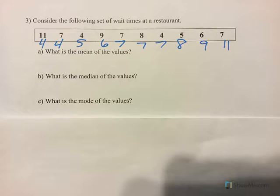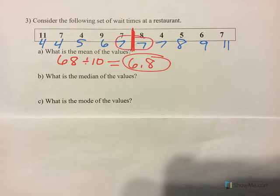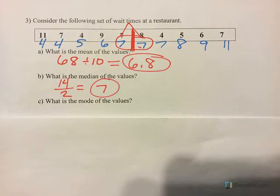If we're going to find the mean, the first thing we do is add them all together. If I add all 10 numbers together, I get 68. I divide by 10 because there are 10 numbers here for the wait times at a restaurant, and that gives me a mean of 6.8. The median is the number in the middle. There are 10 numbers, so 5 above and 5 below means there are 2 numbers in the middle. Taking 7 plus 7 equals 14, divided by 2, I still get 7. So my median is 7. And the mode — the number that appears most often — is also 7, because 7 appears 3 times.